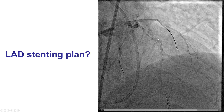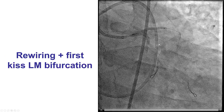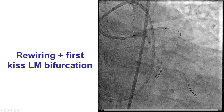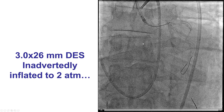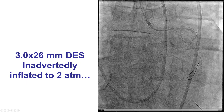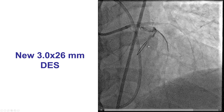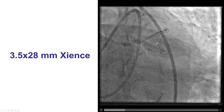We then decided to stent the LAD. It was a fairly long stent because there was significant disease going all the way close to the mid-LAD. We rewired for the first kissing balloon inflation and tried to deliver a 3.0×26 mm drug-eluting stent, but the balloon of the stent was slightly inflated upon connection — the stent looked much fatter than expected. Fortunately, this came out and we used a new drug-eluting stent to stent the proximal LAD lesion.